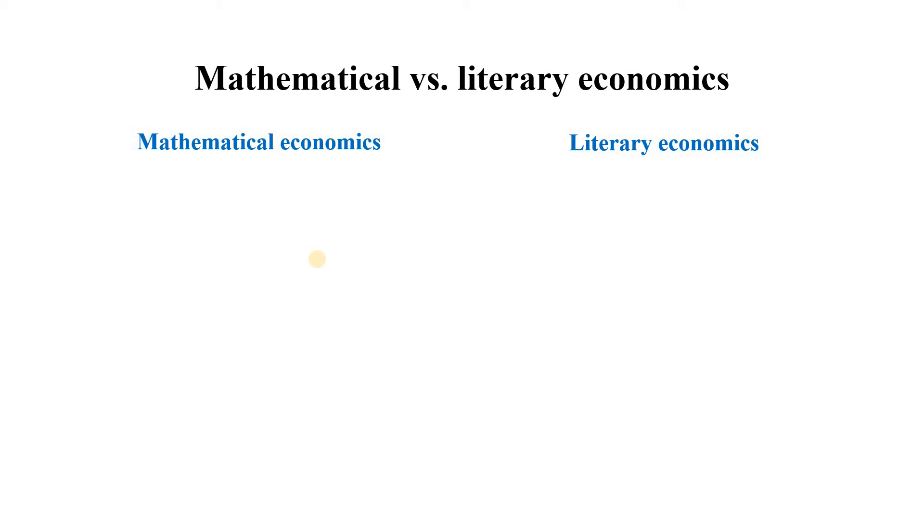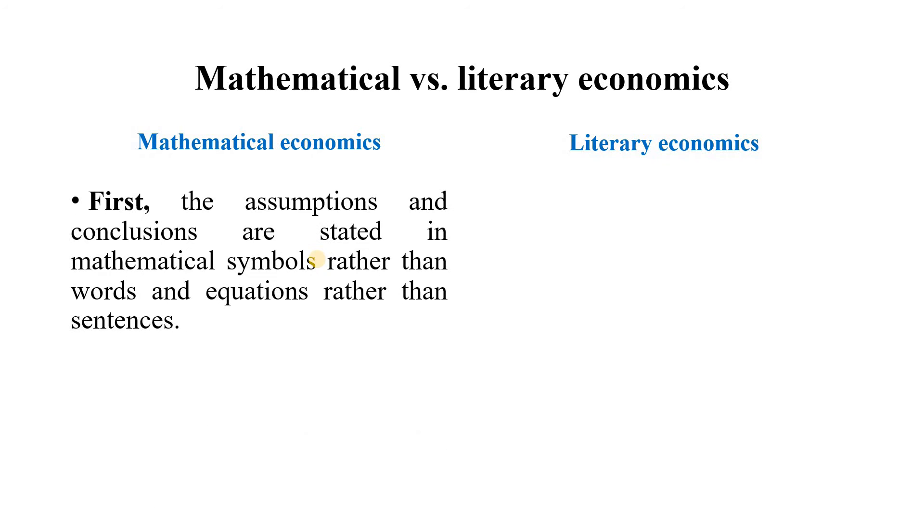The major difference between mathematical economics and literary economics is two-fold. First, the assumptions and conclusions are stated in mathematical symbols rather than words, and equations rather than sentences.